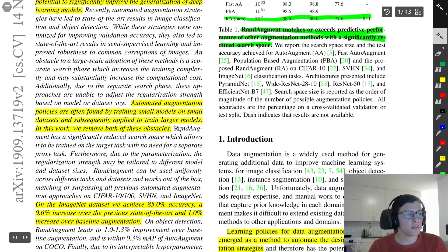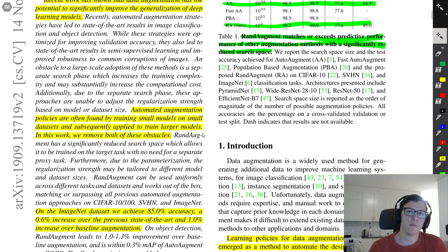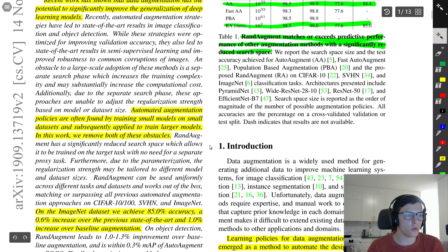Automated augmentation policies are often found by training small models on small datasets and subsequently applied to train larger models. In this work, they remove both of these obstacles. As I mentioned, previous data augmentation policies had so many hyperparameters that they had to be trained on very small models, and then those hyperparameters found would be taken to a larger model.